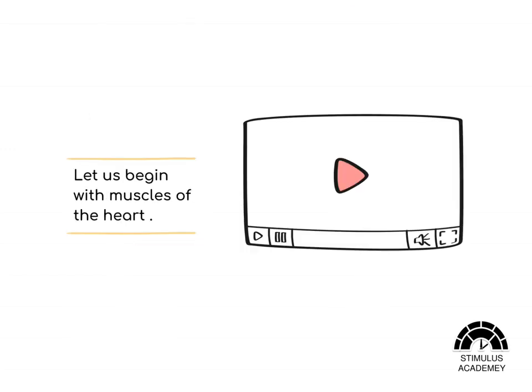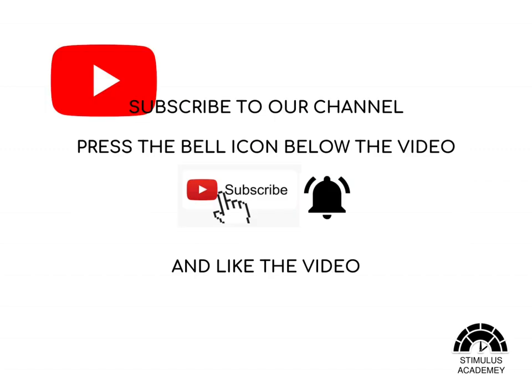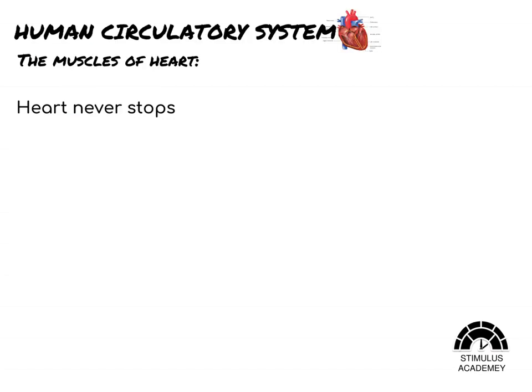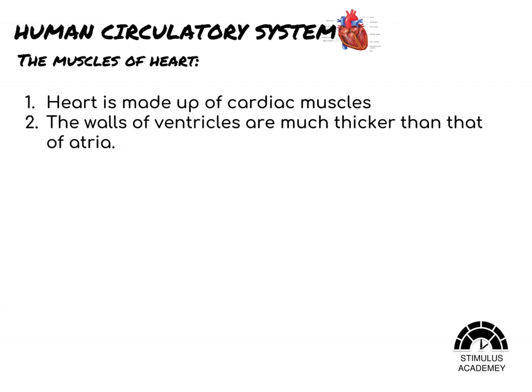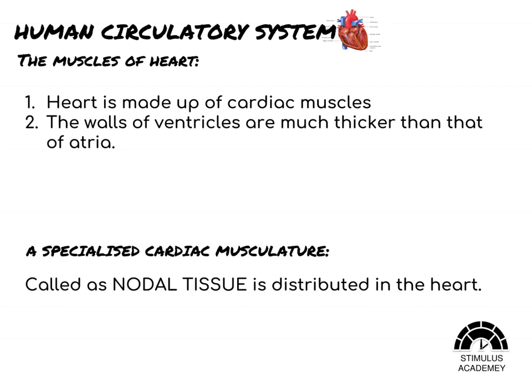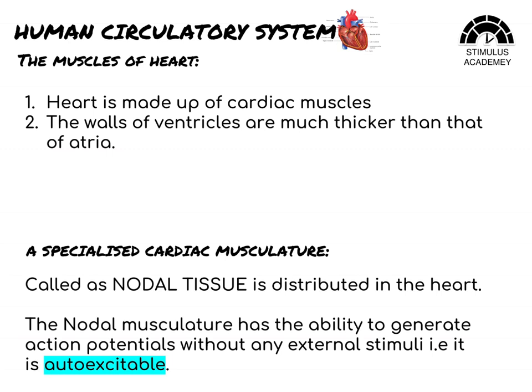Now let us begin with the muscles of the heart. The heart never stops; if it does, we die. For this continuous strenuous work, the heart needs specialized muscles. A specialized cardiac musculature called nodal tissue is distributed in the heart. The nodal musculature has the ability to generate action potentials without any external stimulus — that is, it is auto-excitable.